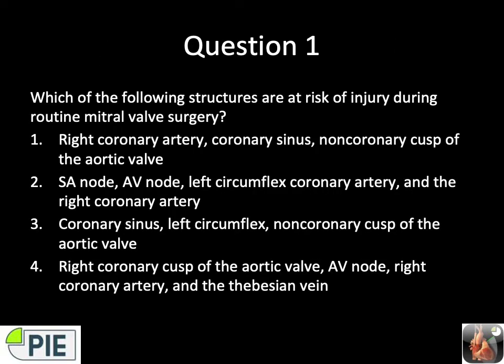Question number one: Which of the following structures are at risk of injury during routine mitral valve surgery? Is it RCA, coronary sinus, non-coronary cusp of the aortic valve? Is it the SA node, AV node, left circumflex and RCA? Coronary sinus, left circumflex, non-coronary cusp of the aortic valve? Or right coronary cusp of the aortic valve, AV node, RCA and the LCX?